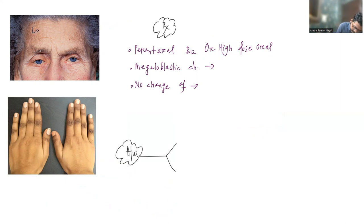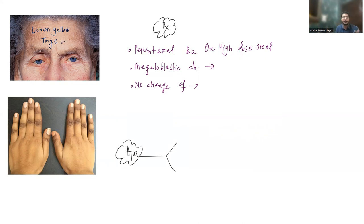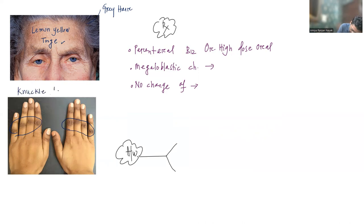The tongue will become beefy red — that is atrophic glossitis. Atrophic glossitis is a very non-specific finding; it can be seen in various vitamin deficiencies including iron deficiency. Patients can also develop a lemon yellow tinge in the skin, especially the facial skin. This is not specific for Pernicious Anemia — it can be seen in any patient with vitamin B12 deficiency. Patients can also develop gray hair and knuckle hyperpigmentation, which is a very interesting clinical finding.